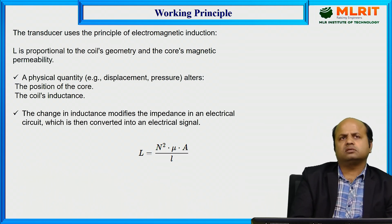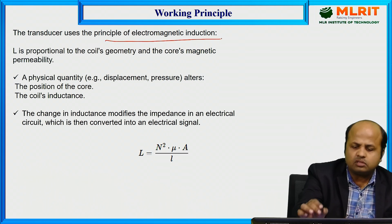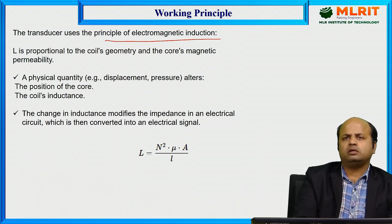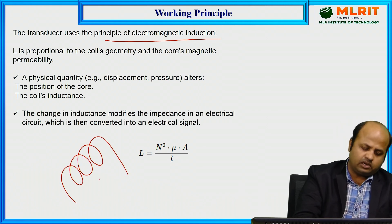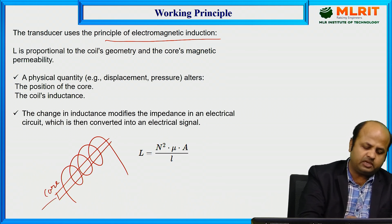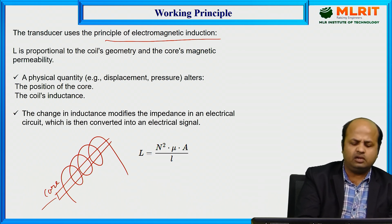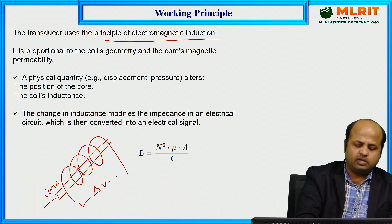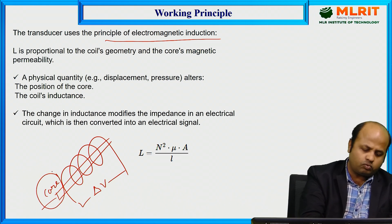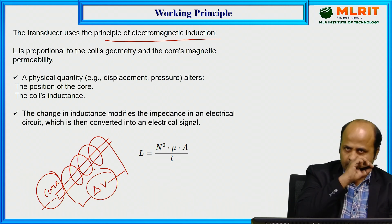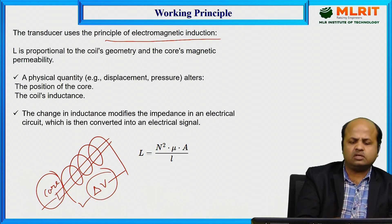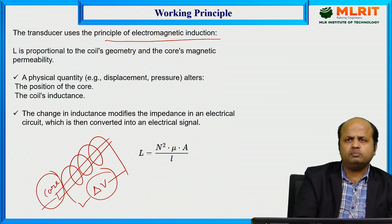This transducer works on the principle of electromagnetic induction. When a coil is wound on a core and the core is displaced manually, there will be a change in the magnetic field inside the coil. Whenever there is a change in the magnetic field or magnetic flux in the coil, there will be a change in the voltage across the coil. In this way, core displacement is converted into a change in output voltage — this is the working principle of an inductive transducer.